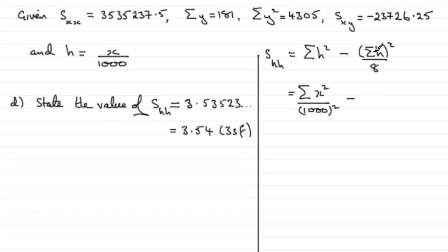Then we've got minus sigma H all squared. So this will be sigma, the sum of all the X's over 1000 all squared, and again I could just do this as the sum of X all squared divided by 1000 all squared.